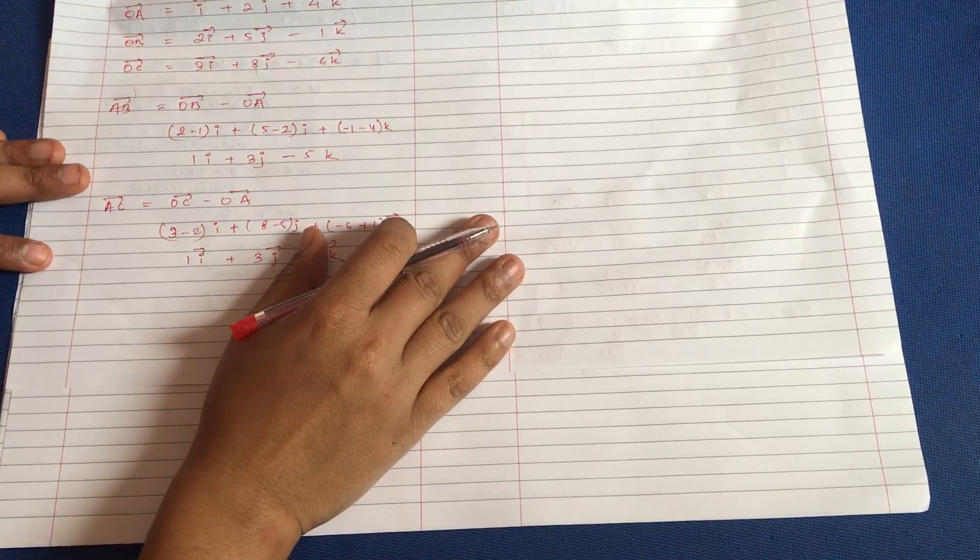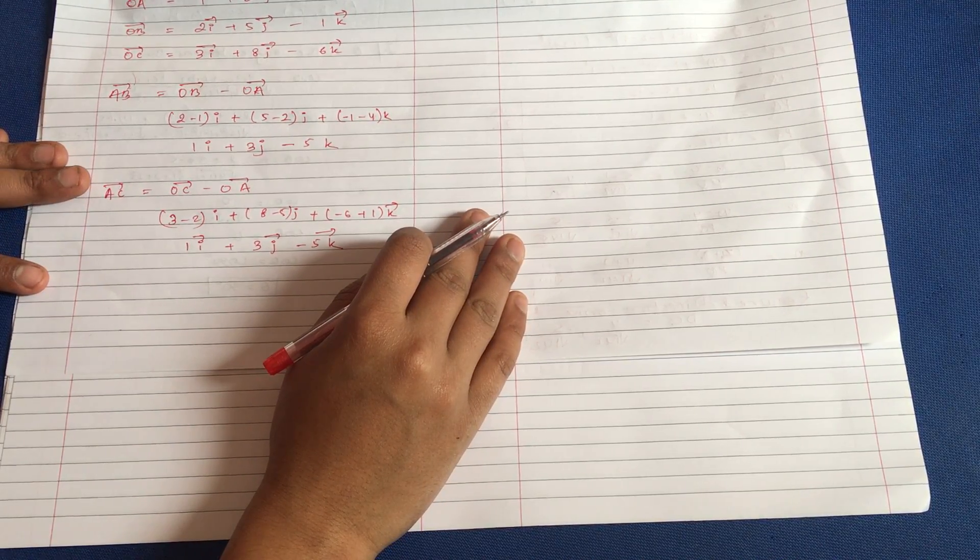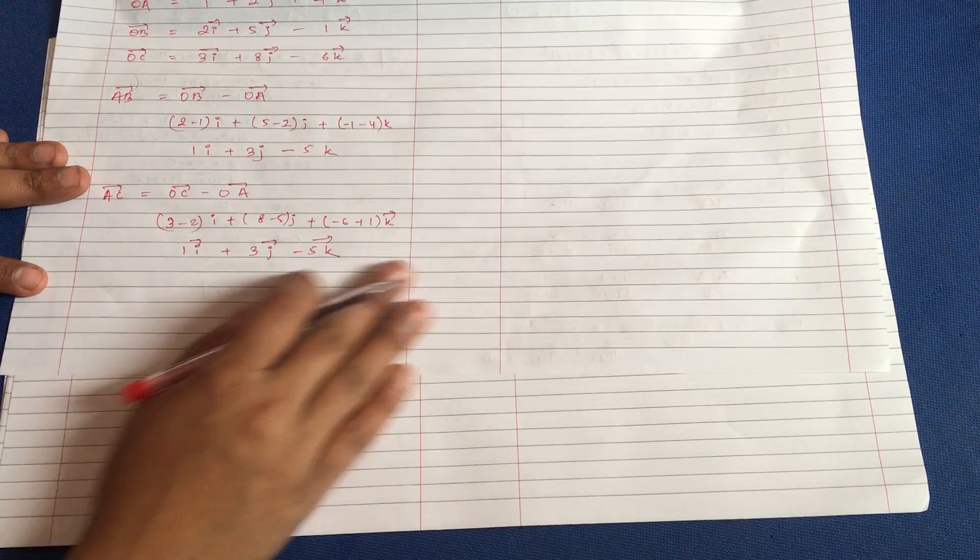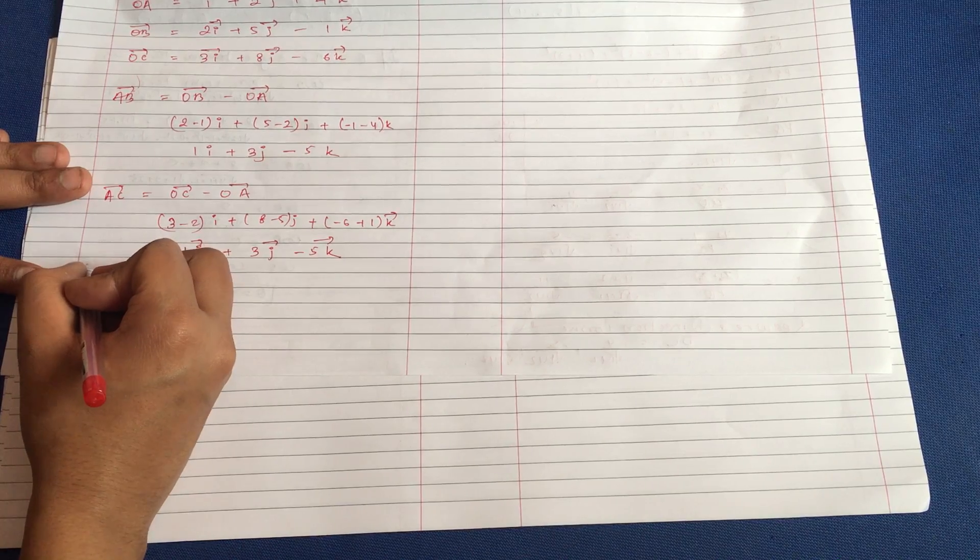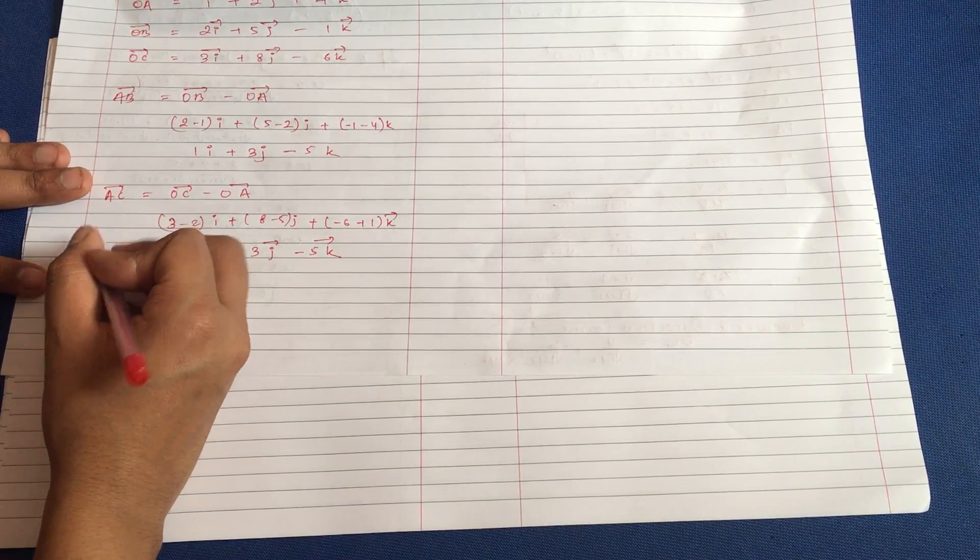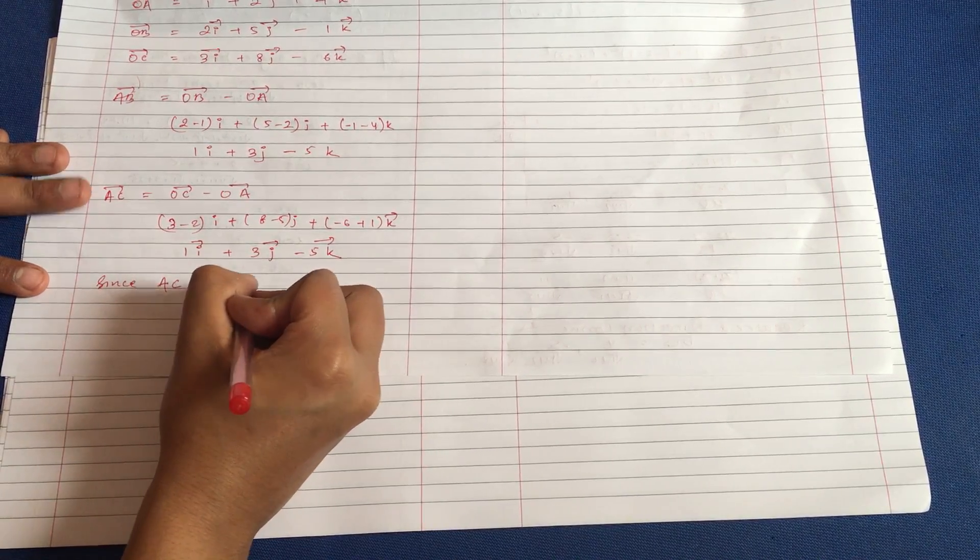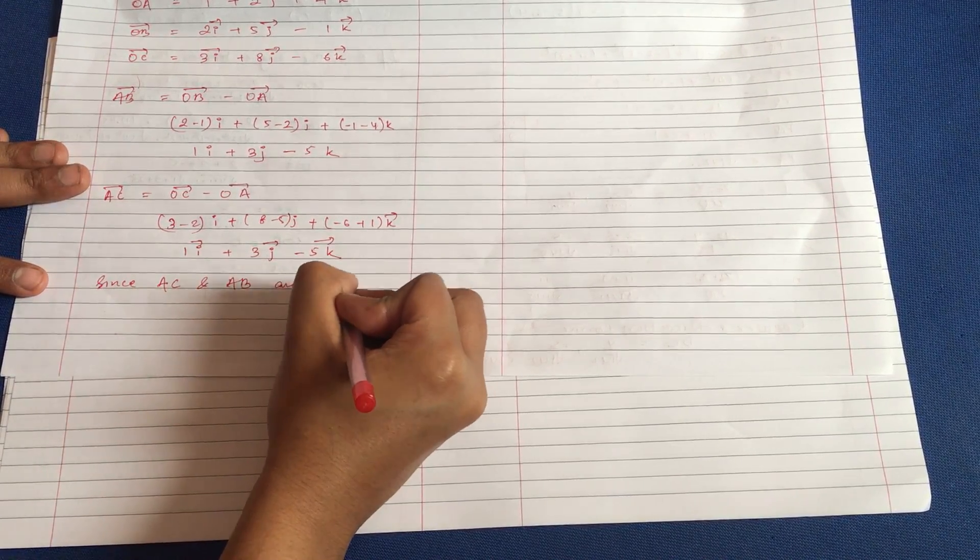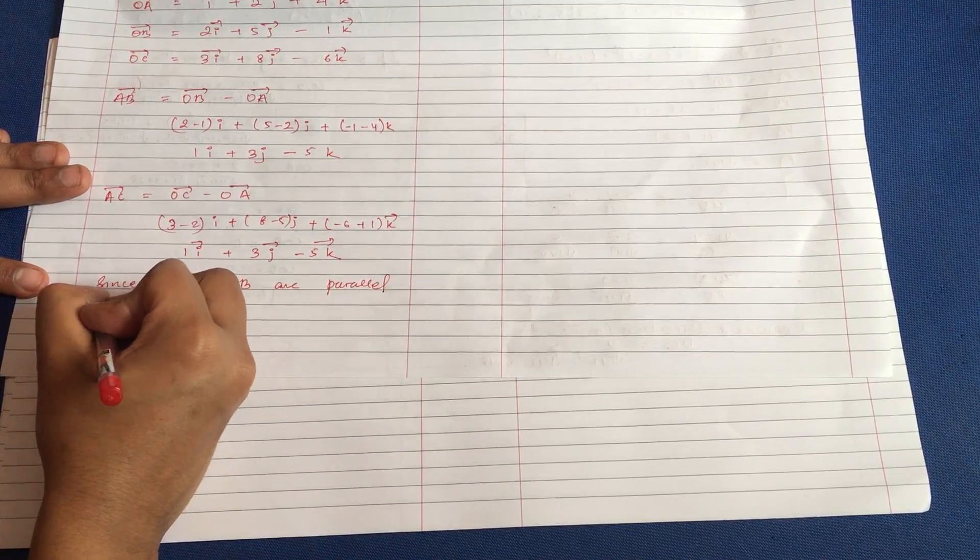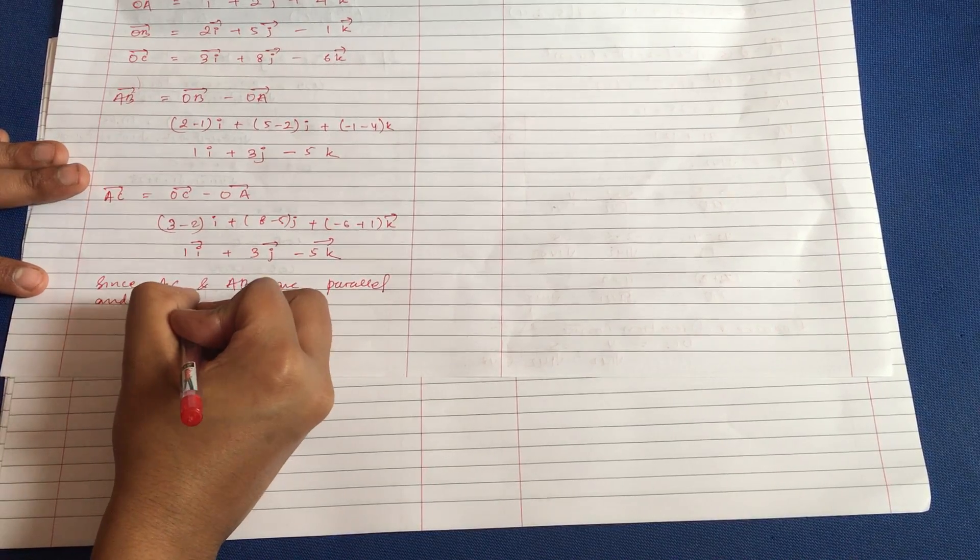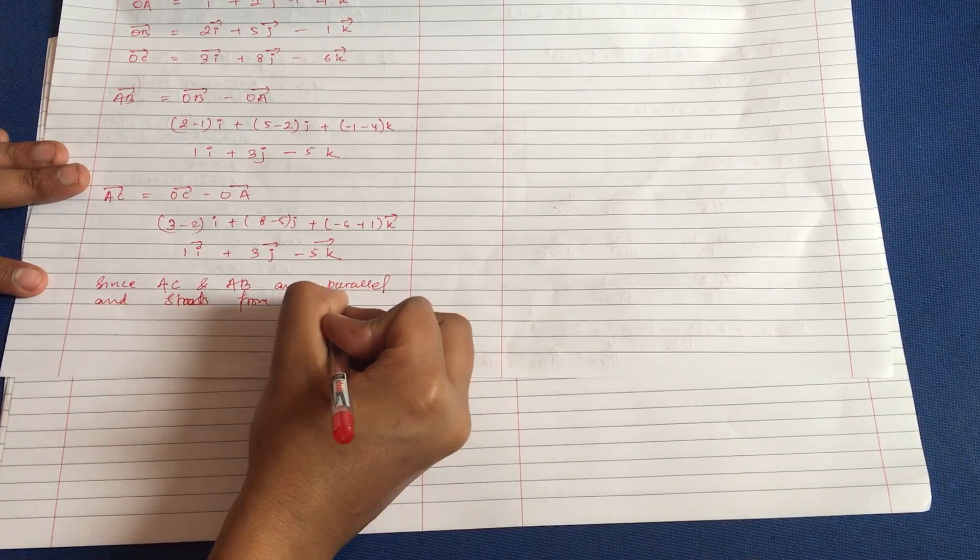So what you can do is, since AC and AB are parallel and start from the same point, the points are collinear.